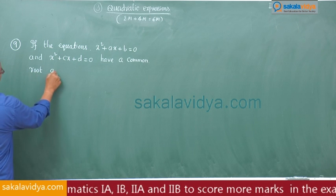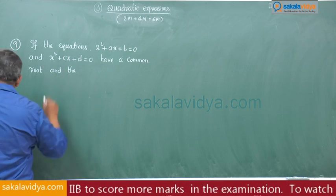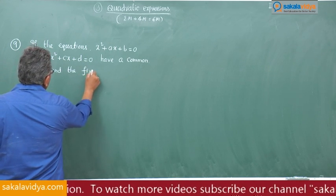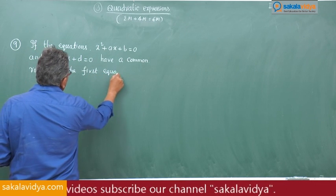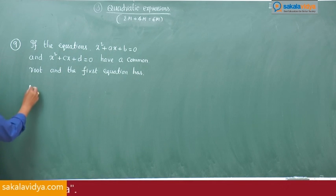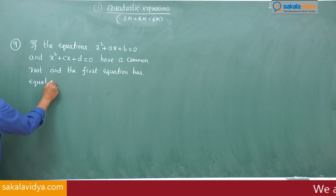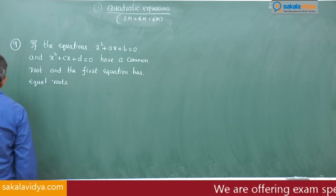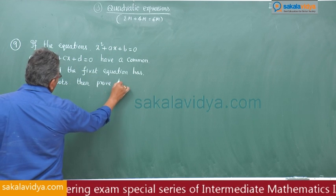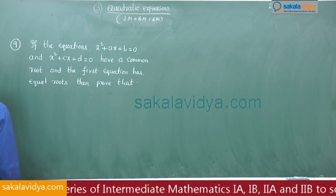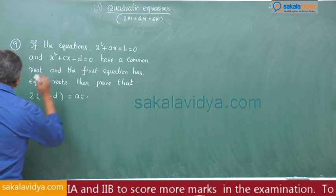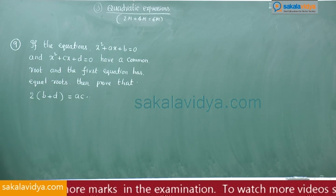And the first equation has equal roots, then prove that 2 times B plus D is equal to AC. This we have to prove.